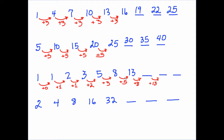13 plus 8 is 21, so the next addition is 21. Then 21 plus 13 is 34, and 34 plus 21 is 55. This sequence is known as the Fibonacci sequence.